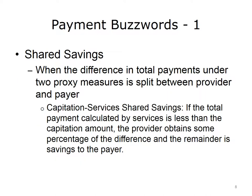There are two payment buzzwords worth knowing: shared savings and pay for performance. In the shared savings model, the difference in total payment under two proxy measures is split between the provider and payer. An example is a capitation-services shared savings model, where if the total payment calculated by adding up the cost of all services needed is less than the capitation amount, the provider obtains some percentage of the difference and the remainder is savings to the payer.